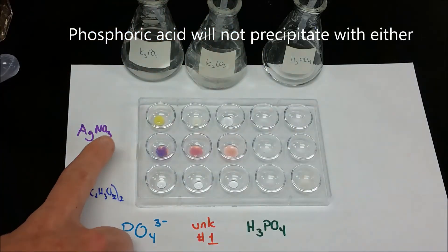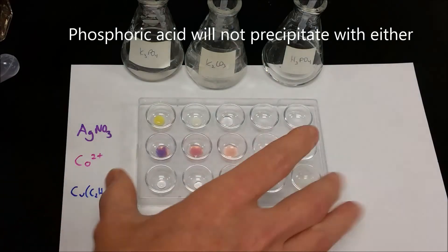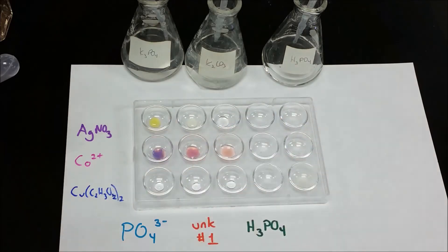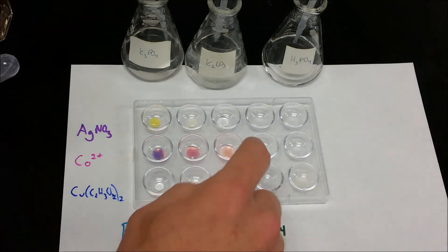So we see that the precipitate here is different than the unknown, but the phosphoric acid didn't form a precipitate for the silver nitrate nor for the cobalt compound.